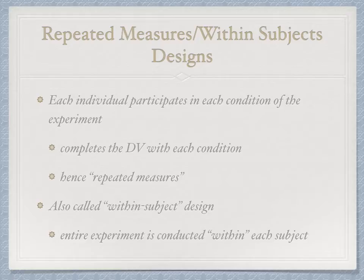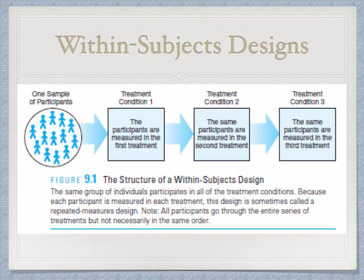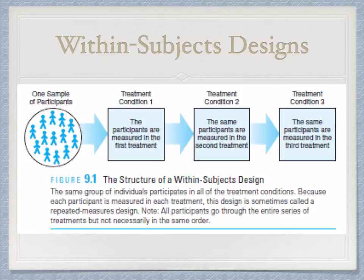There's a graph from the textbook that demonstrates this nicely. We have one sample of participants — in a Between Subjects Design with three conditions, we'd have three separate samples. Here, one sample is measured on the dependent variable for treatment condition one, two, and three. We get three data points from every participant. This allows us to have fewer participants, which is very beneficial when working with special or harder-to-reach populations, like in developmental studies. It also reduces or eliminates individual differences because the same people are participating.